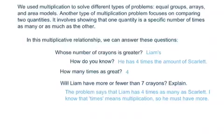Let's think about this multiplicative relationship with the story problem I just told you. Let's see if we can answer these questions. Whose number of crayons is greater? We know that's Liam's. How do we know? Well, it's said in the problem that he has four times the amount of Scarlet. So how many times as great? Four times as great, right? So will Liam actually have more or fewer than seven crayons? And explain that. We could say the problem says that Liam has four times as many as Scarlet. I know that times means multiplication, so he must have more because she had seven to begin with, right? So he must have more than the seven.